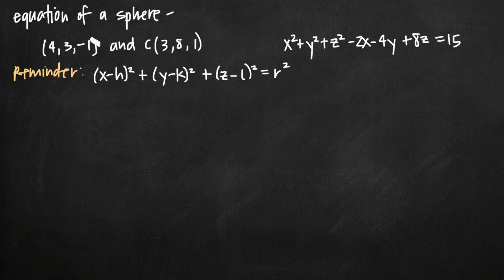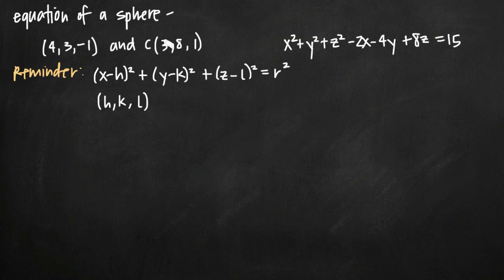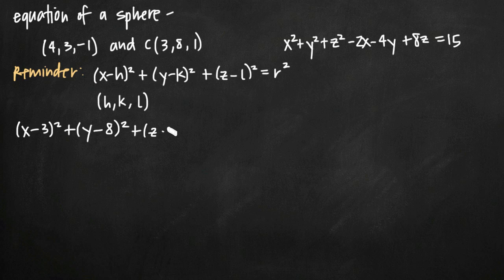We're going to use that to find the equation of a sphere given these two points. The sphere passes through a point and has its center at a given point. In three variables, the center of our sphere is at the coordinate point h, k, l. So we plug in the center coordinates 3, 8, 1 for h, k, and l, giving us x minus 3 squared plus y minus 8 squared plus z minus 1 squared equals r squared. We still need to find the radius.